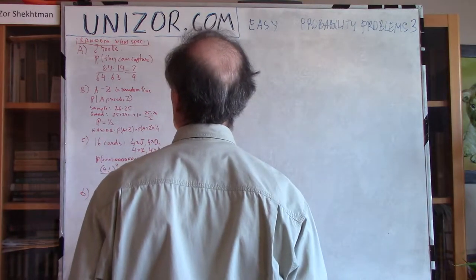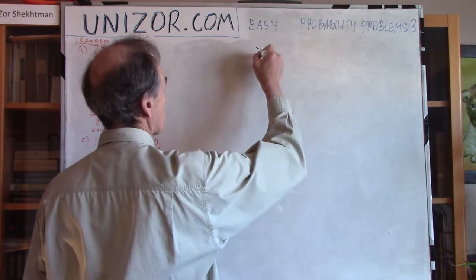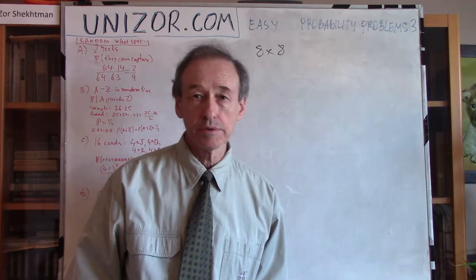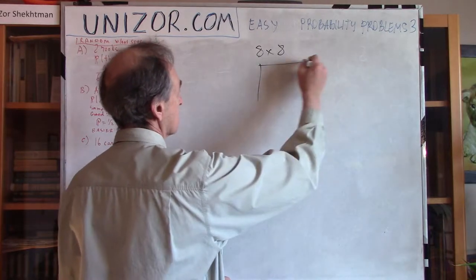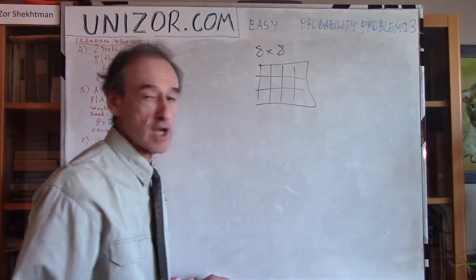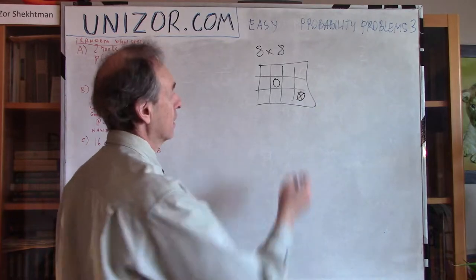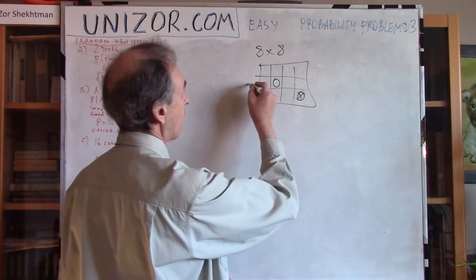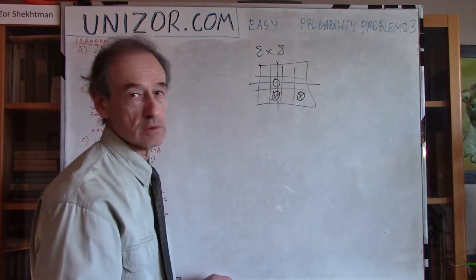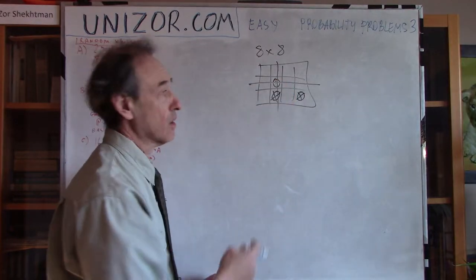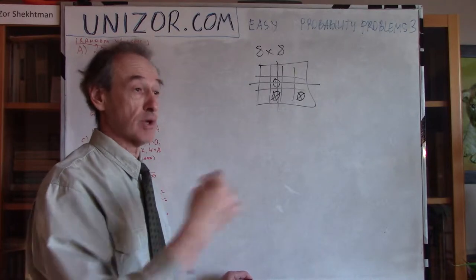Problem number one: in chess, the game is on an 8x8 board. On every cell you can put a piece — we're talking about rooks. If this is your chess board with one rook and another, one white and one black, in this position they cannot capture each other. But if they are on the same horizontal or vertical line, then one can capture the other. Being on the same horizontal or vertical line is what matters for a rook.